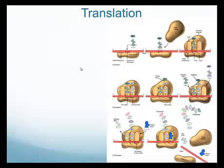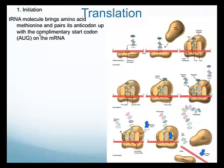The process of translation breaks down into three steps. First is initiation. Notice that the ribosome is actually two subunits that come together. The tRNA molecule, which has its amino acid and its anti-codon, goes to meet the start codon — the three letters AUG — on the mRNA. Once it does that, this is the beginning of translation.